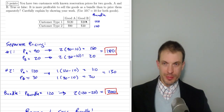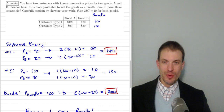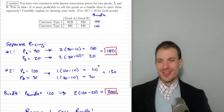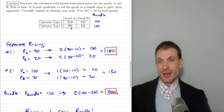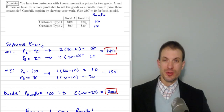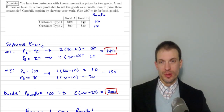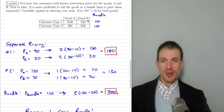For good B, suppose we set the price up to consumer of type 2's willingness to pay of $30. Only they will buy, and profits are $20 for good B, giving total profits of $130 — that's worse. We could also try intermediate combinations: set good A at $90 and good B at $30, or good A at $120 and good B at $20. Looking at these numbers, none of these are more profitable than $180.